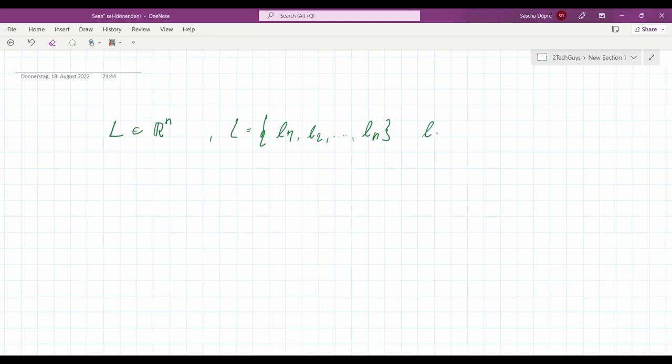Where Ln in this case is also an element of the real number space. And n is a natural number plus 0. That's why the plus is up there.